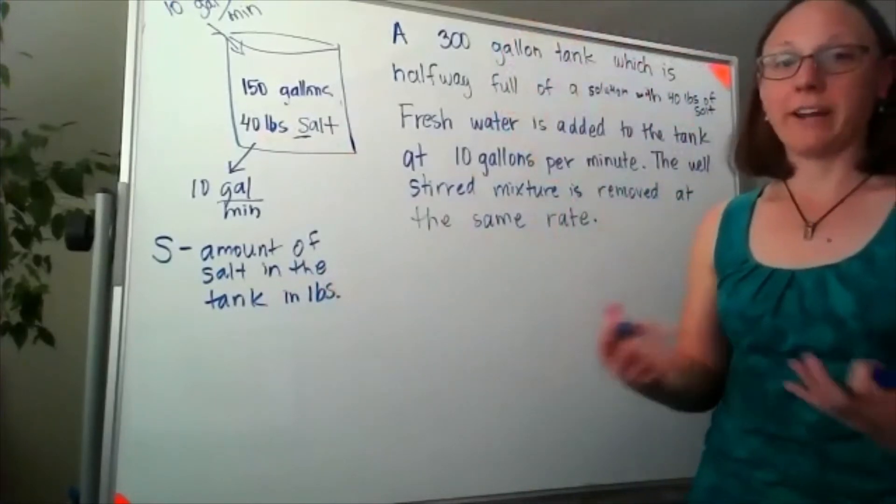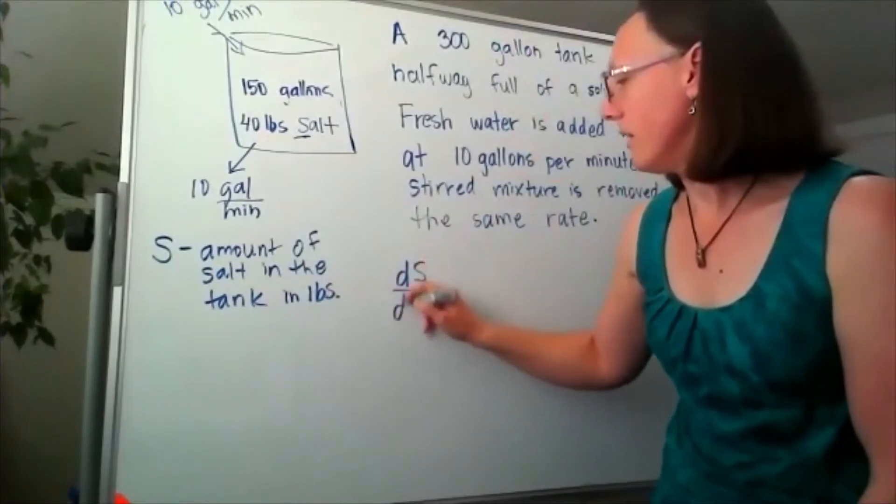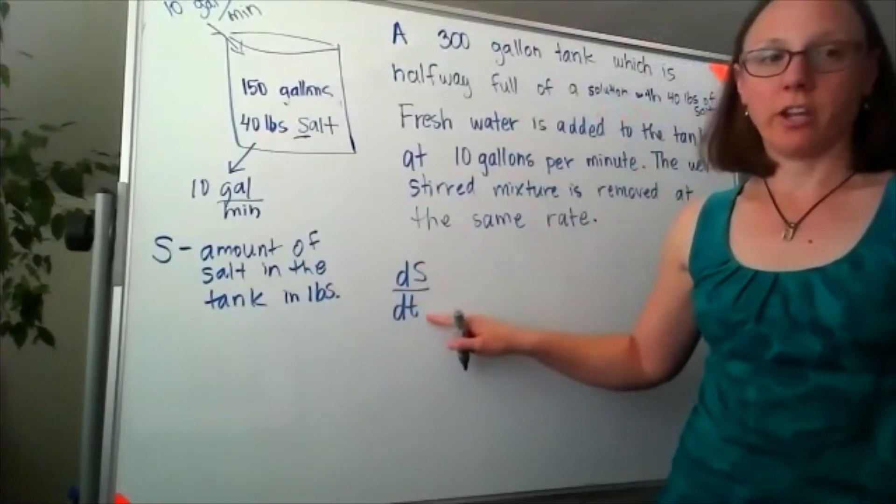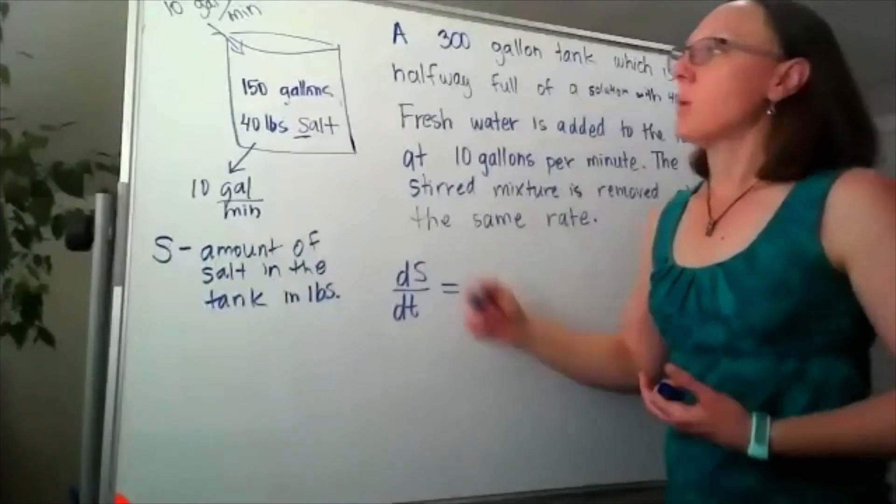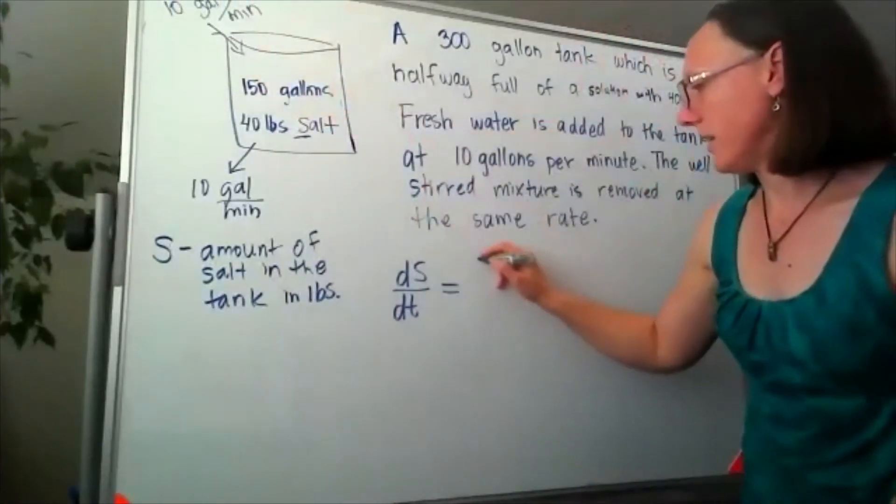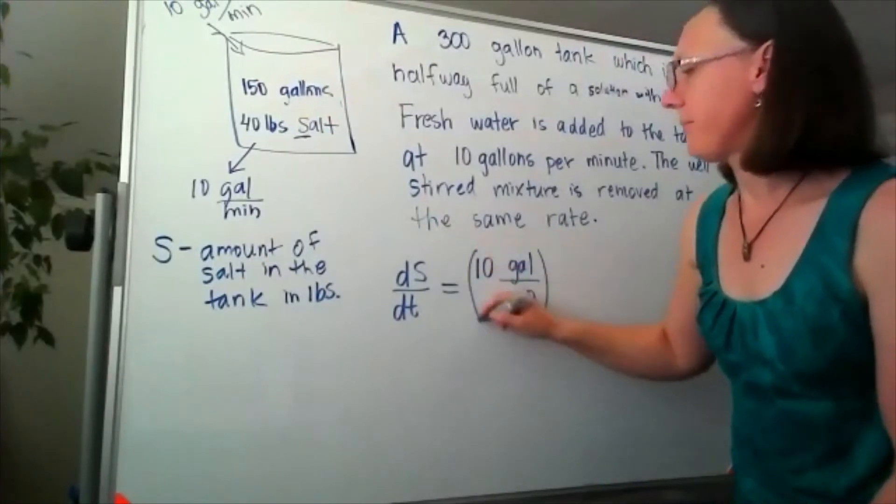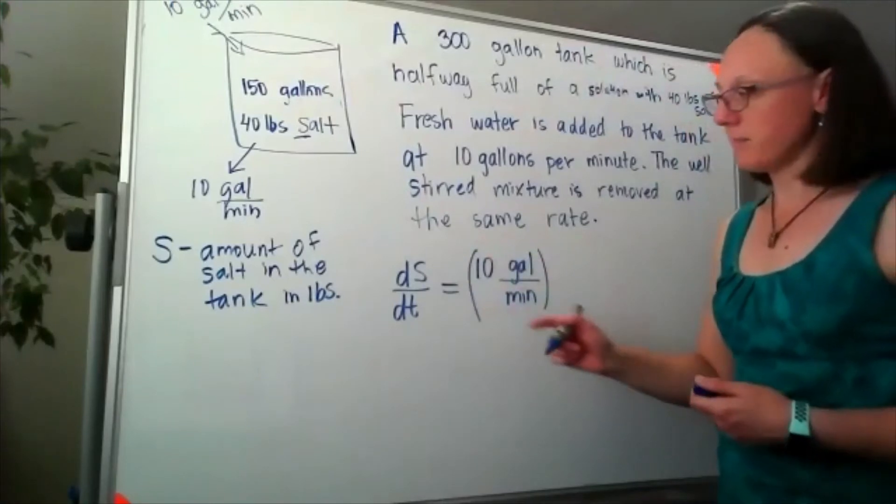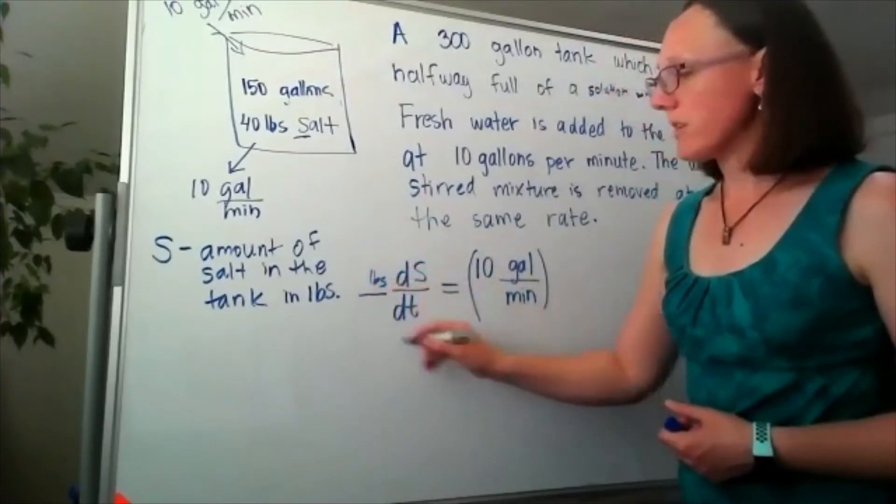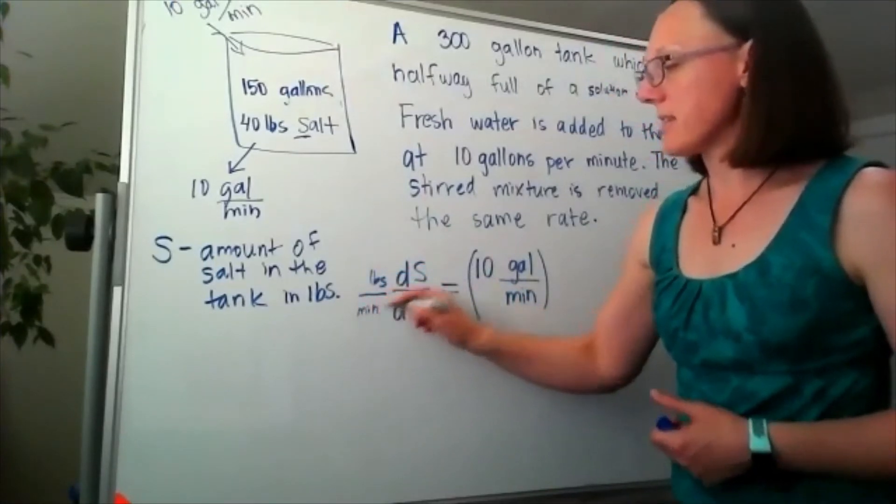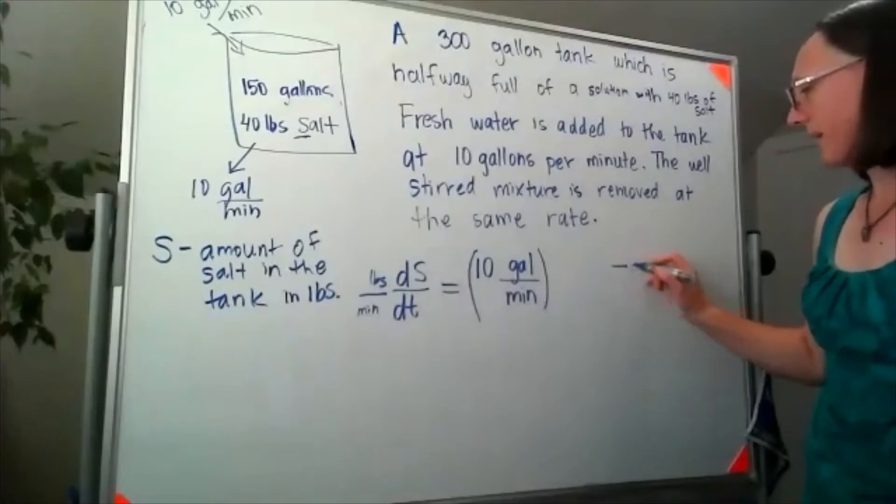Back to my idea of the rate of change being what's coming in minus what's going out. That means that how the amount of salt is changing over time is equal to—well, let's look at what's coming in. What's coming in is 10 gallons per minute. Now I want to do a quick check on the units. My units of salt are pounds and my units of time in the problem are minutes, which means that if I'm going to have an in minus an out...